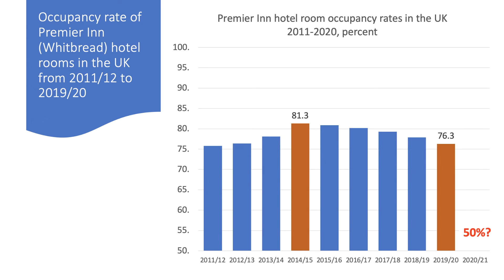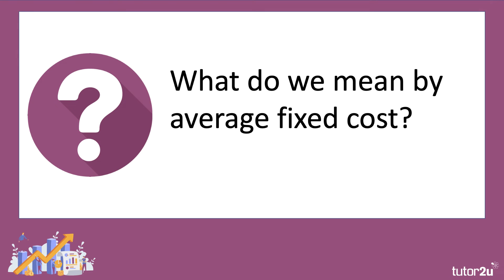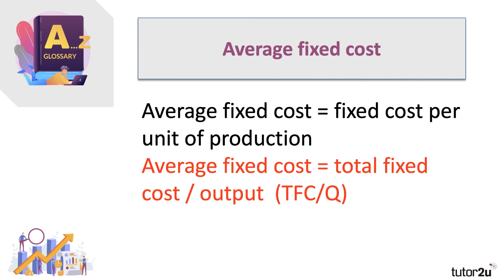Why does this matter? It could be as low as 50%. It matters because of the impact on a firm's costs per unit. In particular, let's consider what a rise in spare capacity or a fall in capacity utilization might have on a firm's average fixed costs. Average fixed cost, or AFC, is the fixed cost per unit of production. We take the total fixed cost — the total overheads, TFC — and divide by the level of output in a given time period. TFC over Q gives the fixed cost per unit.